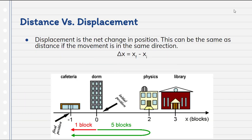Displacement, however, is a little bit different. Displacement is the net change in position. This can be the same as distance if movement is in the same direction. In the previous problem, the distance and displacement are the same — 6.4 kilometers — because distance is how far you traveled and displacement is how far you are from where you started. But let's look at another example: going from the dorm to physics class.